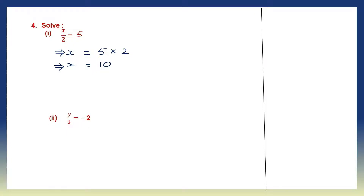Question 2: y by 3 equals minus 2. We need to solve for y, so we leave y on the left hand side and minus 2 on the right hand side. Transpose 3 to the right hand side — that becomes multiplication. The sign is minus; 2 threes are 6. So y is equal to minus 6.